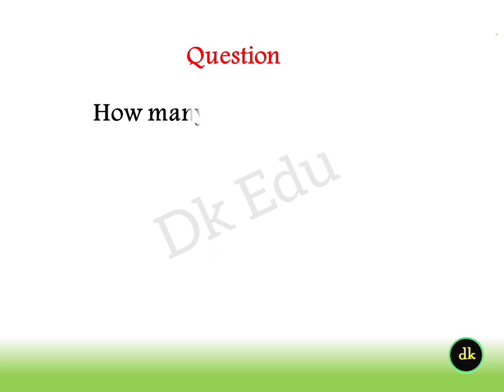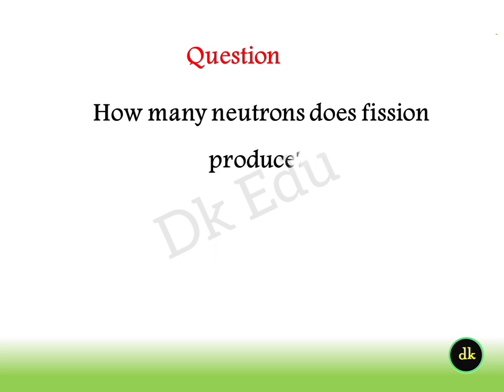How many neutrons does fission produce? Answer: 2 or 3.